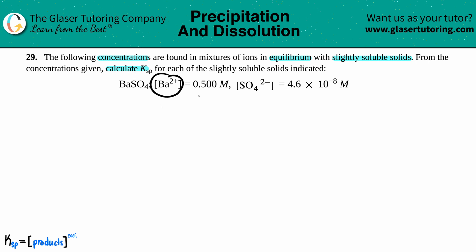They told us that the barium ion concentration is 0.500 molarity and the sulfate ion SO4 2- is 4.6 times 10 to the negative 8 molarity. From this information we just have to calculate the Ksp, the solubility product. Remember, a solubility product always comes from a balanced equation, so that's always the first thing you got to do.